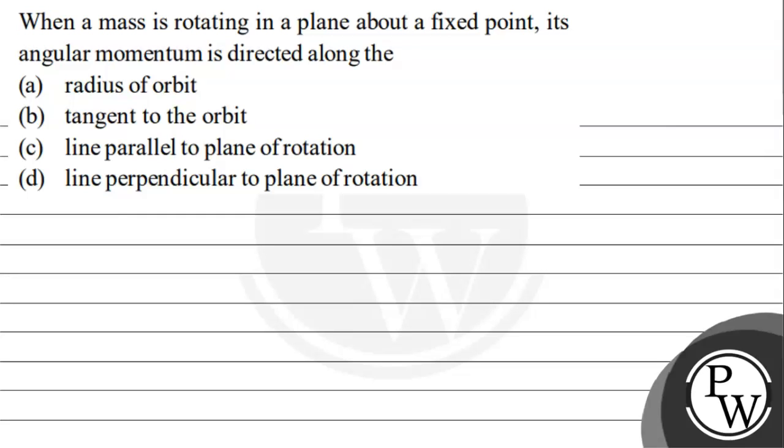The question says that when a mass is rotating in a plane about a fixed point, its angular momentum is directed along the... and the options are: radius of orbit, tangent to the orbit, line parallel to the plane of rotation, line perpendicular to plane of rotation.